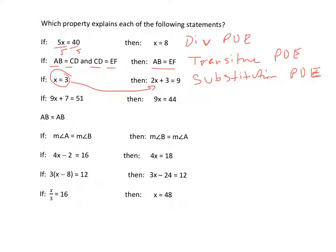All right. If 9x plus 7 equals 51, then 9x equals 44. We pretty much subtracted 7 from each side to achieve this. So we would call this the subtraction property of equality.